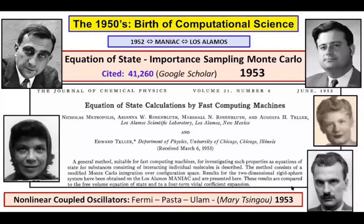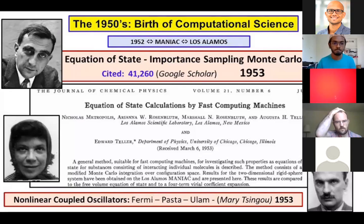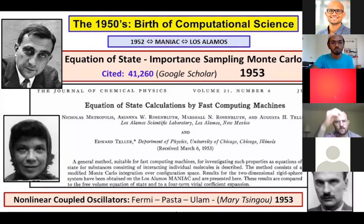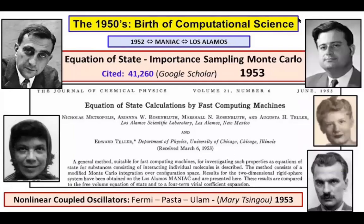I got this picture from Professor Michael Klein, who is at Temple University. He has been doing molecular dynamics and everything since the 1960s. This picture shows what started happening around the 1950s. In the 1950s, Los Alamos National Lab, after the Cold War, got hold of one of the first supercomputers called Maniac.